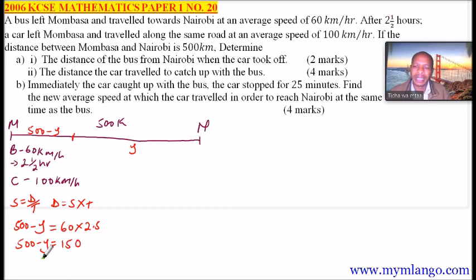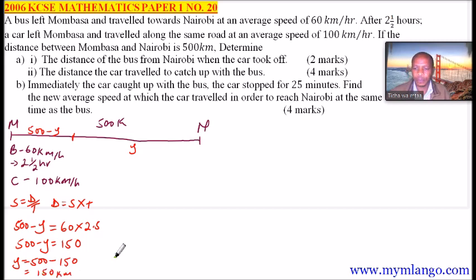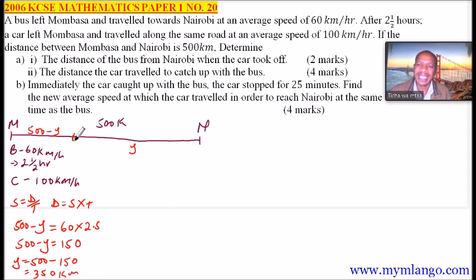So Y equals 500 minus 150, which gives 350 km. That is the distance from Nairobi to where the bus was by the time the car started the journey, two and a half hours after departure.